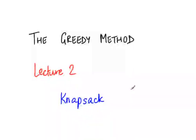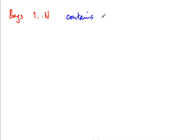In our first lecture we looked at the broad principle of the greedy method and a couple of examples. Now we will look at one very standard problem which is amenable to a greedy solution. The problem is called knapsack. You have n bags and they all contain something valuable and divisible — suppose each contains some chemical. Each bag has a weight, so the weight of bag i is Wi.